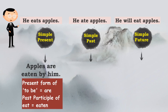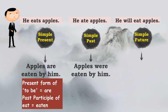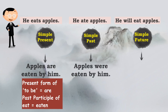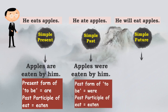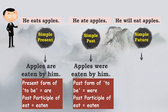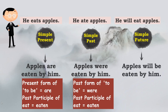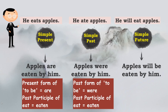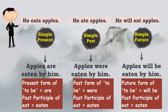For 'He ate apples': 'were' is used because 'ate' is past tense. 'Eaten' remains the same — the past participle remains the same in all tenses. For the simple future, 'He will eat apples' becomes 'Apples will be eaten by him.' You begin with the object: 'will be eaten' — 'eaten' is the same, but the 'to be' form changes to 'will be.' We cannot write 'will eaten,' so we write 'will be eaten by him.' This is how the transformation is done with reference to simple future.